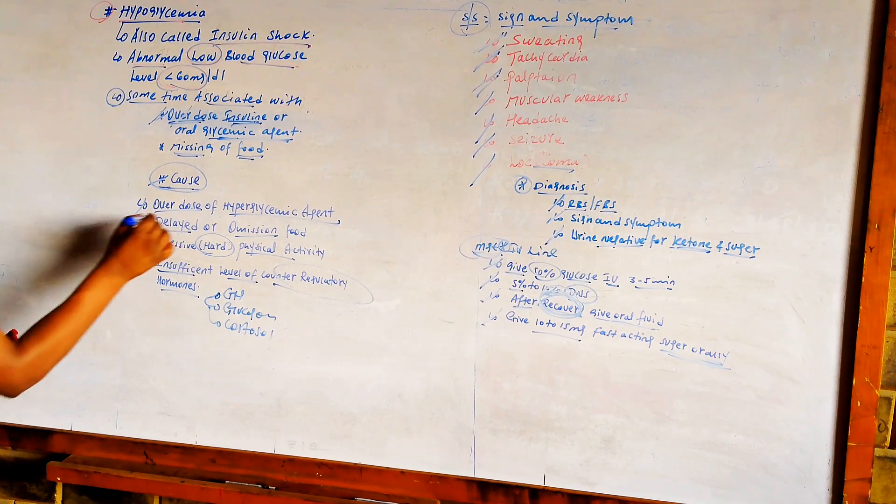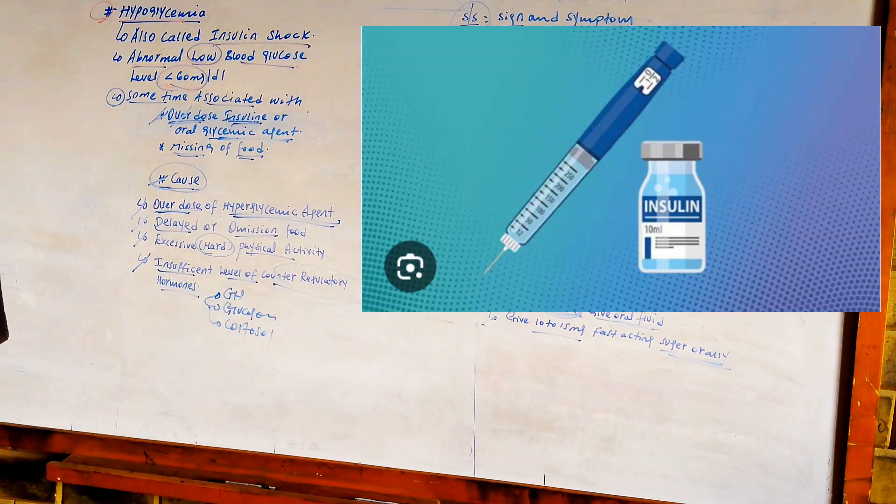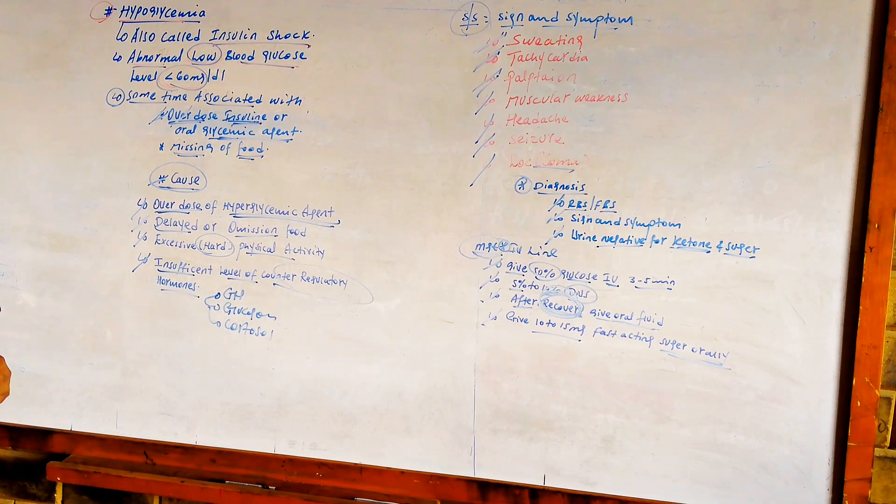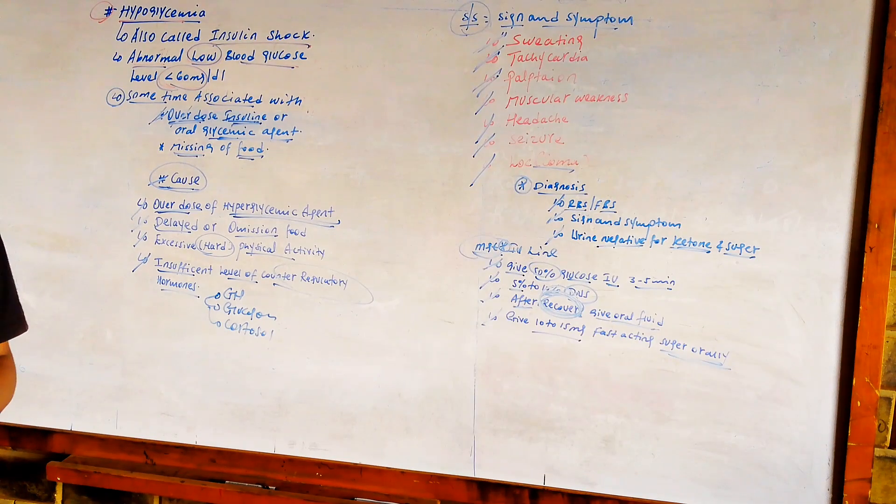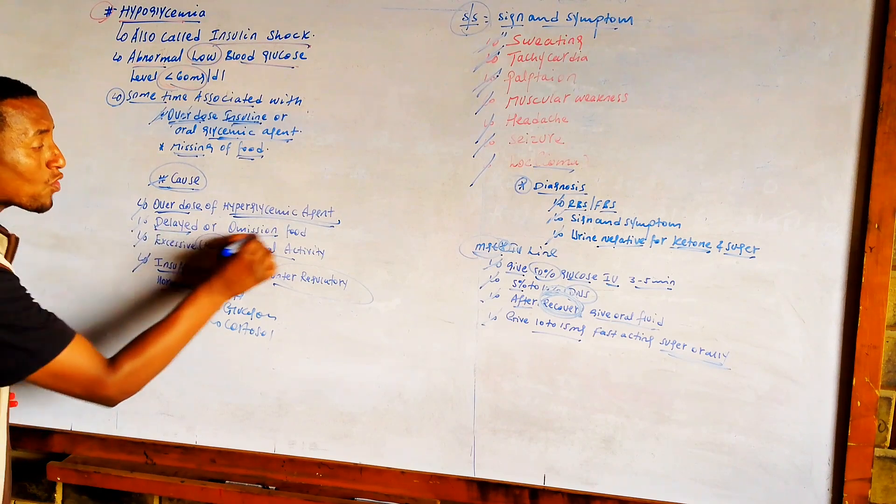The cause of hypoglycemia is an overdose of hypoglycemic medications, as previously mentioned, except metformin. It can also be delayed or omission of food.